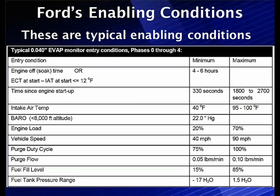Engine load must be between 20 and 70 percent — it won't run at wide open throttle. Vehicle speed must be 40 to 90 miles per hour. Purge duty cycle ranges between 75 and 100 percent, and purge flow must be 0.5 down to one-tenth of a pound per minute. Fuel level must be 15 to 85 percent. If the tank is over 85 percent full, the air space is too small for accurate vacuum decay calculations. If below 15 percent, it's mainly air with no fuel, making the calculation equally difficult.